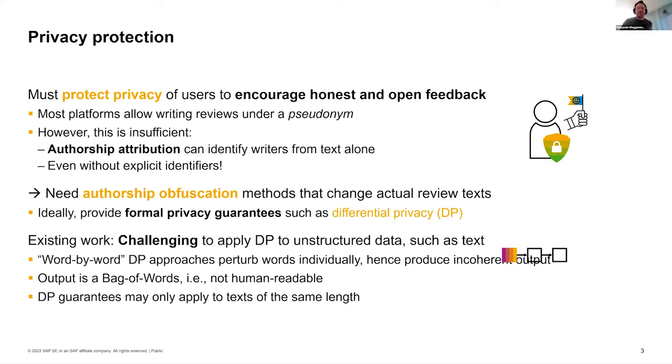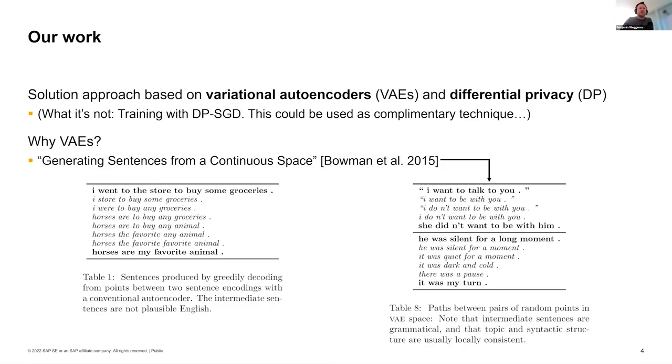The existing approaches typically apply differential privacy not to an entire text. They only work word by word in a sequence of words, which constitutes your text. This can cause several undesired effects. It may produce incoherent output because you perturb each word individually and you don't really consider the context. The other case is the output is just a bag of words, so you're completely losing the order of your words, the grammar, and it's not really human readable anymore. In some cases, the differential privacy guarantees actually only cover texts of the same length. If you have one text which is 10 words long and another which is 20 words long, then the guarantees don't really cover these two inputs of different lengths. So this is our challenge that we try to solve in our work.